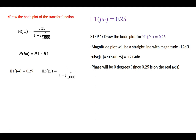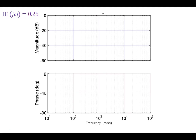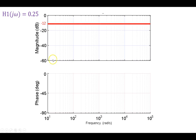So for h1 on the magnitude and phase plot: the magnitude is a straight line at minus 12 dB across all frequencies, and the phase angle is 0 degrees for all frequencies since 0.25 is a real number on the real axis.